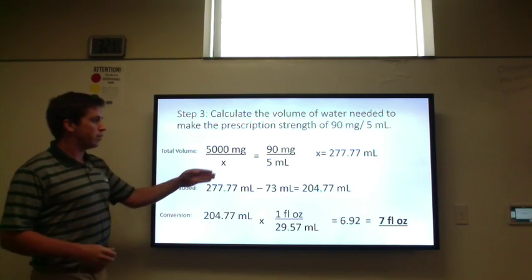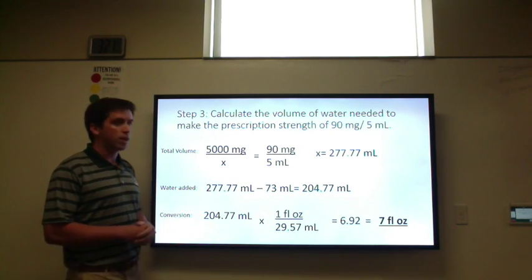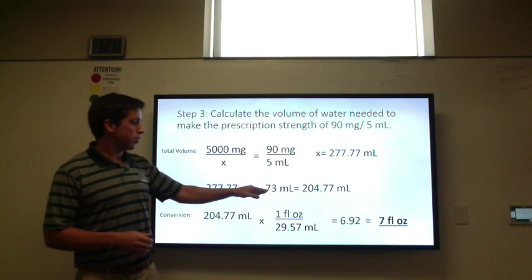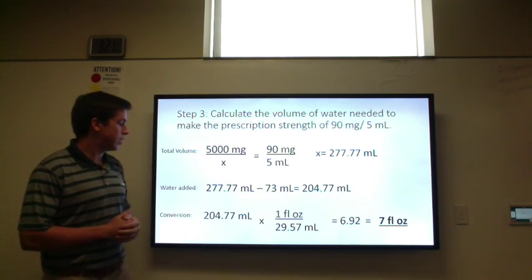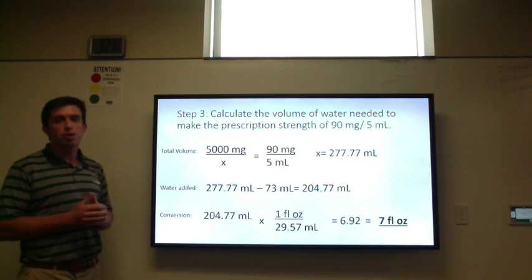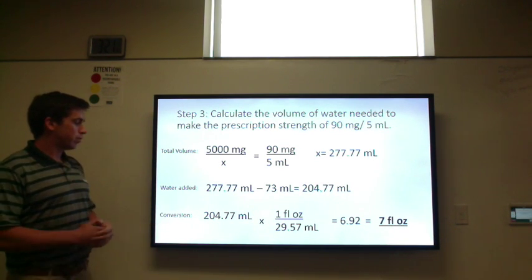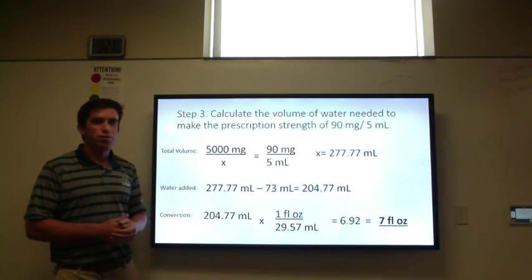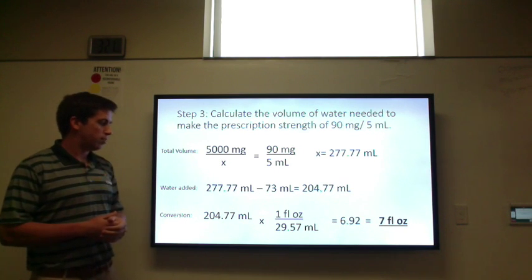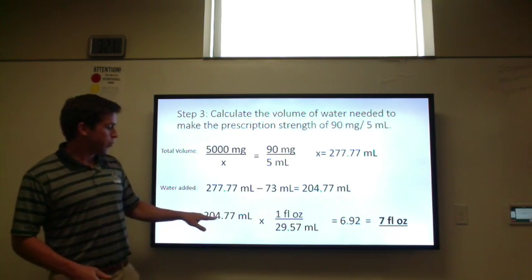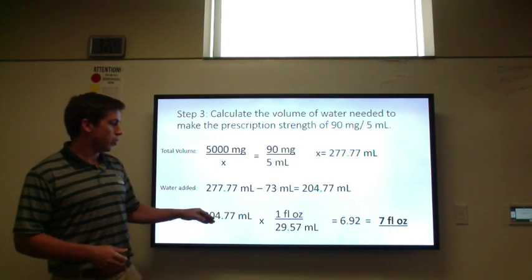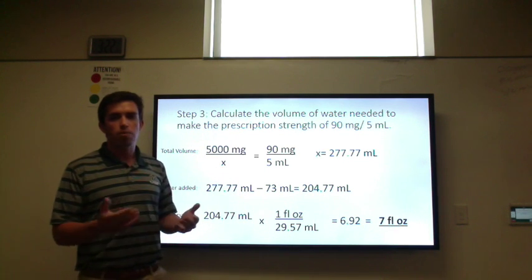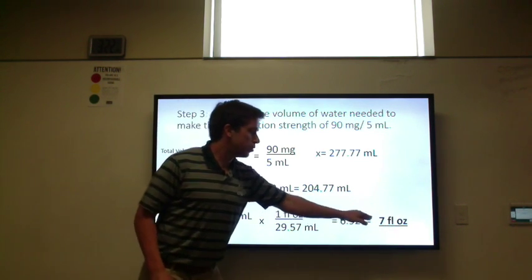Now calculating the amount of water to add: we have a total volume of 277.77 milliliters. We subtract the volume of the dry powder — 73 milliliters — which gives us 204.77 milliliters of water needed. If the answer were requested in milliliters we could round to 205, but since it asks for fluid ounces, we convert: 204.77 milliliters divided by 29.57 milliliters per fluid ounce gives 6.92 fluid ounces, which rounds to 7 fluid ounces.